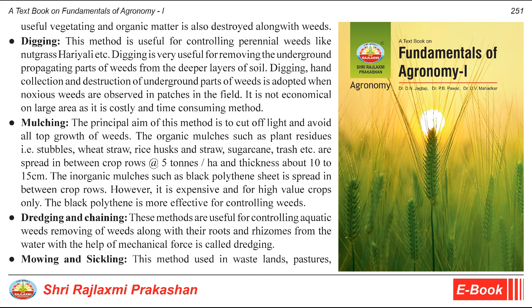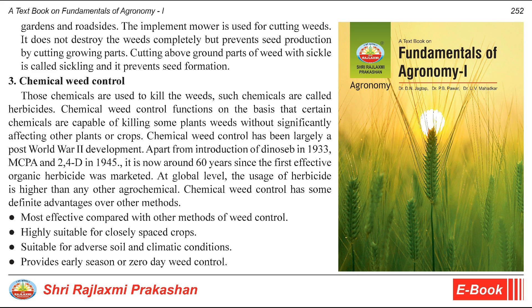Dredging and chaining: these methods are useful for controlling aquatic weeds. Removing weeds along with their roots and rhizomes from water using mechanical force is called dredging. Mowing and sickling: this method is used in waste lands, pastures, gardens, and roadsides. The implement mower is used for cutting weeds; it does not destroy weeds completely but prevents seed production by cutting growing parts. Cutting above-ground parts of weeds with a sickle is called sickling, and it prevents seed formation.